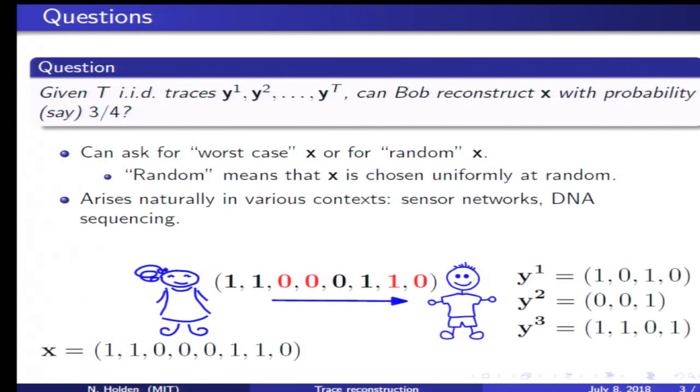This question can be asked in two variants: for X as a worst case string, and for X as some typical string. In our work, we consider the latter case and assume that the bits of X are chosen IID.